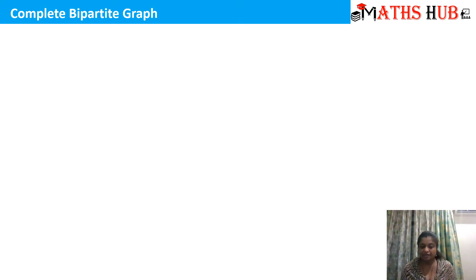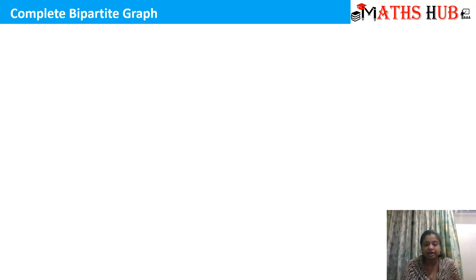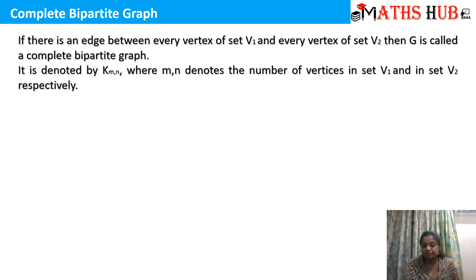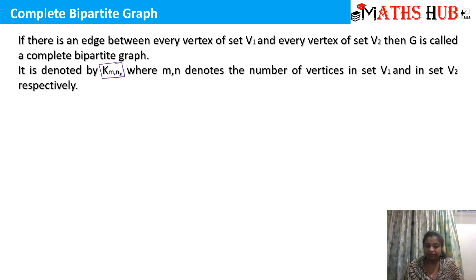Now let's come to a complete bipartite graph. In a bipartite graph, it is not necessary that all vertices in V1 join with all vertices in V2. But in a complete bipartite graph, the condition becomes necessary that all vertices in V1 must be joined with all vertices in V2. If there is an edge between every vertex of V1 and every vertex of V2, then G is called a complete bipartite graph, denoted by the symbol K(m,n), where m is the number of vertices in the first set and n is the number of vertices in the second set.